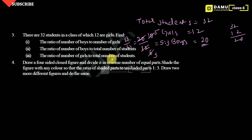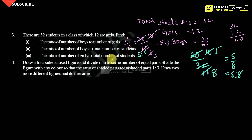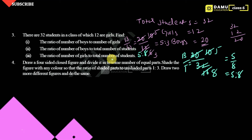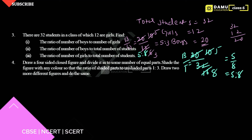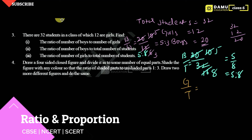Then ratio of number of boys to total number of students: boys are 20, total is 32. Two 10s are 20, two 16s are 32 — then two 5s are 10, two 8s are 16 — so that gives 5:8. For ratio of girls to total: girls are 12, total is 32. Two 6s and two 16s — then 3 by 8 — so the third answer is 3:8.